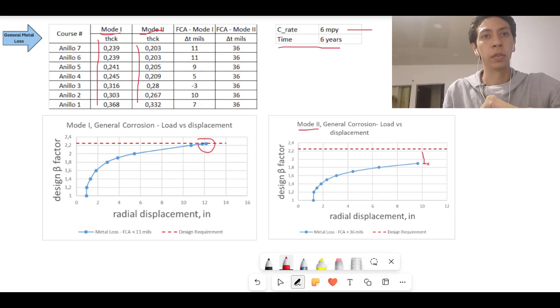We are at the same limit. But in mode two, well, there is a gap here. So it means we won't be able to support the seismic load, hydrostatic load and dead weight. Okay? Now let's move on to local metal loss.